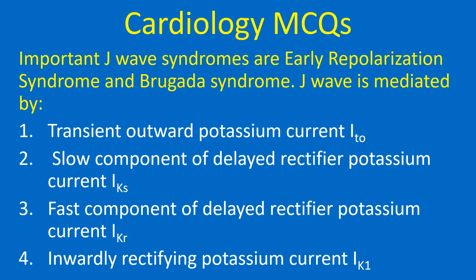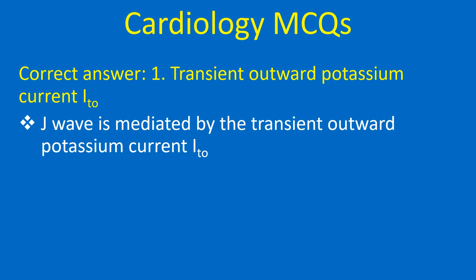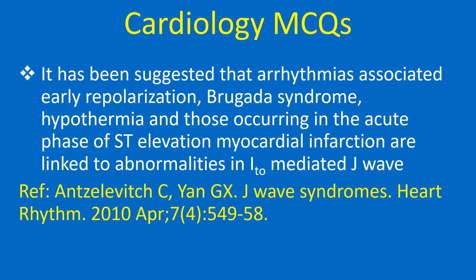Important J wave syndromes are early repolarization syndrome and Brugada syndrome. J wave is mediated by: 1. Transient outward potassium current (Ito), 2. Slow component of delayed rectifier potassium current (IKs), 3. Fast component of delayed rectifier current (IKr), 4. Inwardly rectifying potassium current (IK1). Correct answer: 1. Transient outward potassium current (Ito). It has been suggested that arrhythmias associated with early repolarization, Brugada syndrome, hypothermia, and those occurring in the acute phase of ST elevation myocardial infarction are linked to abnormalities in Ito-mediated J waves.